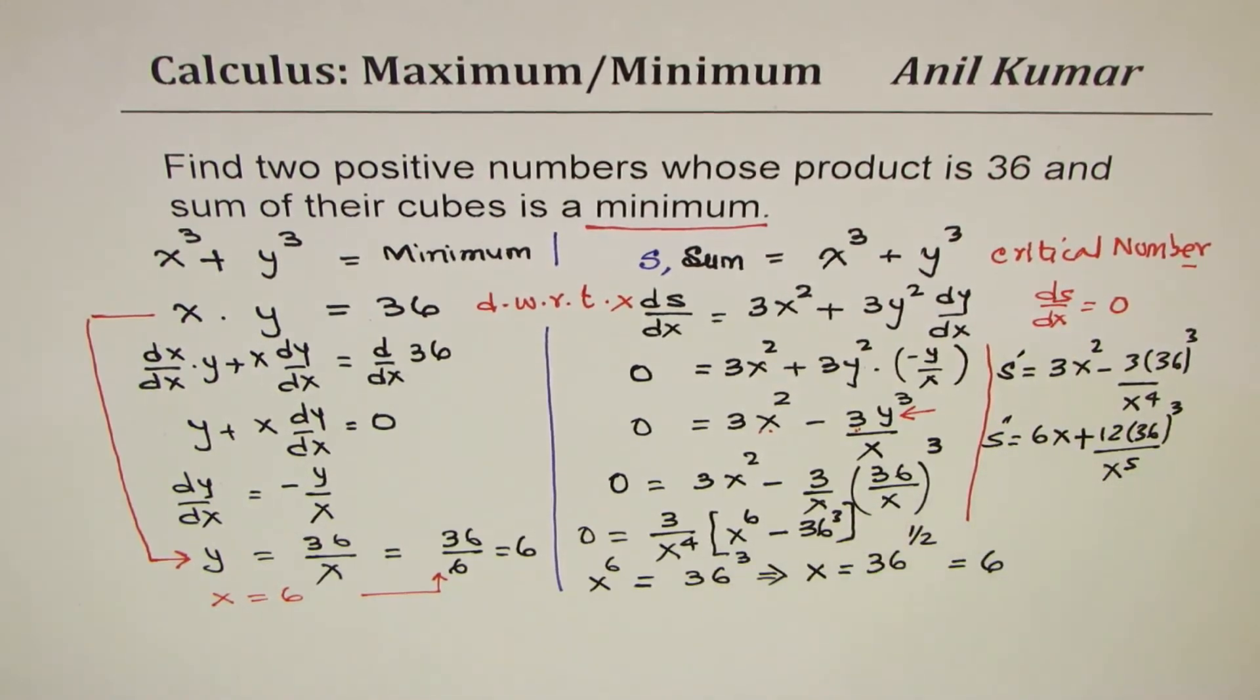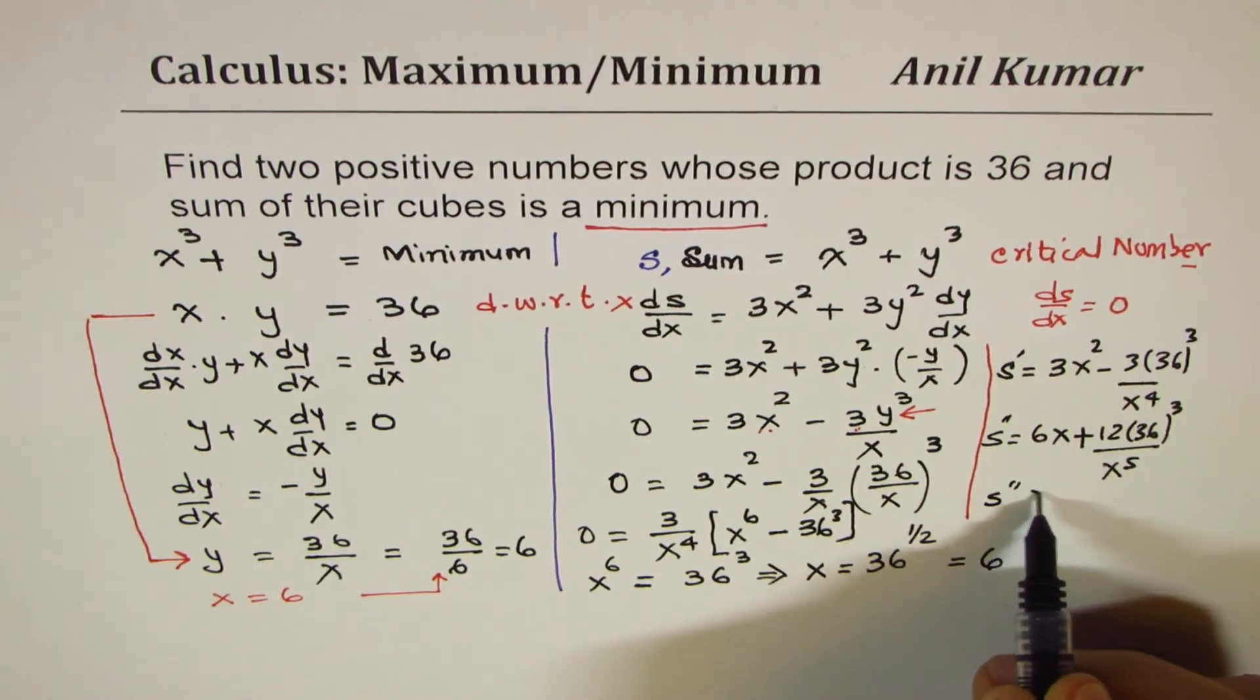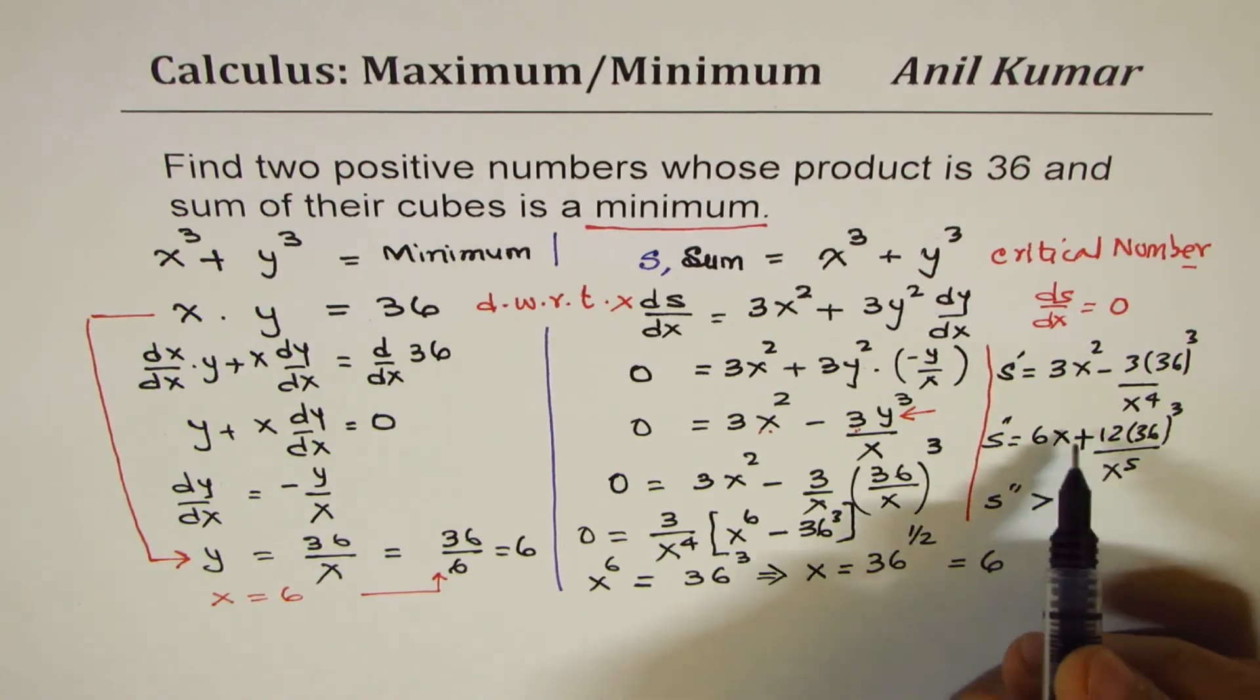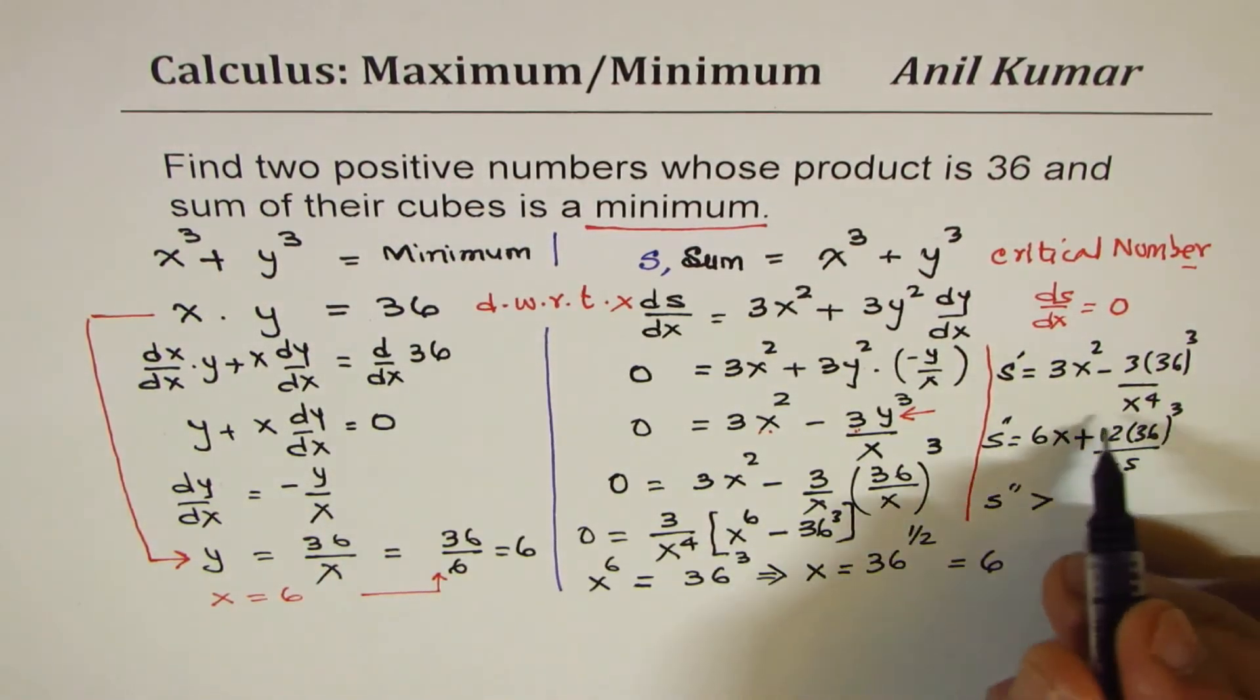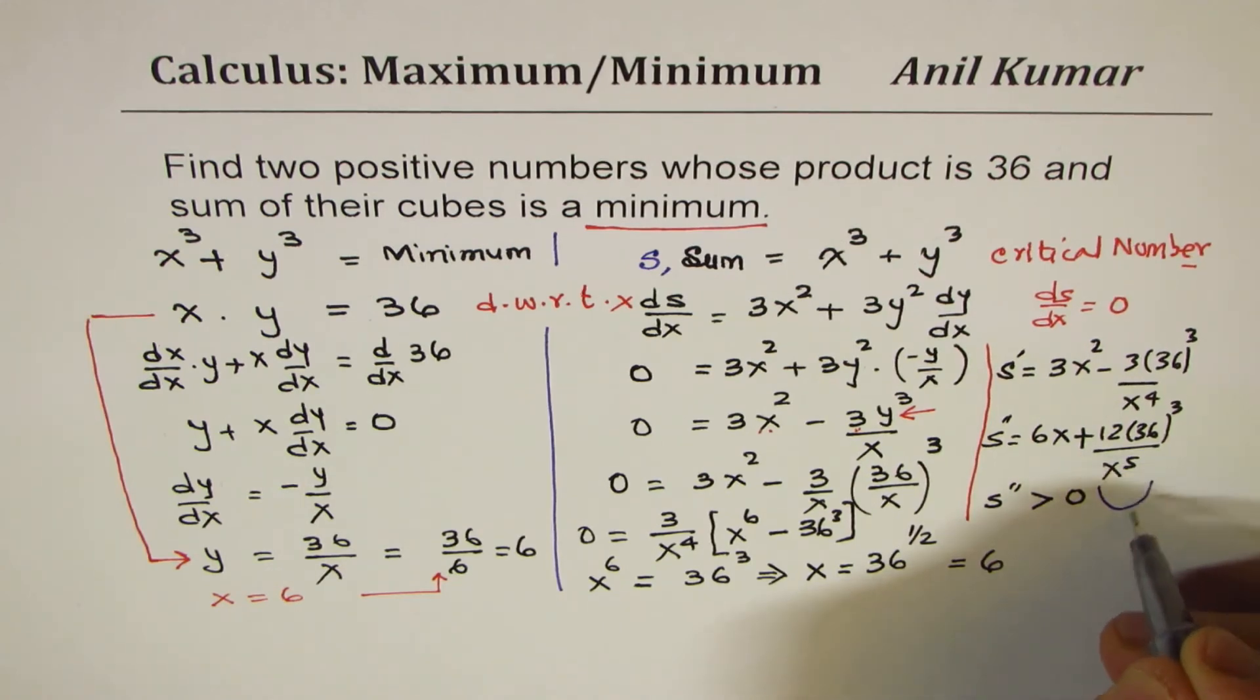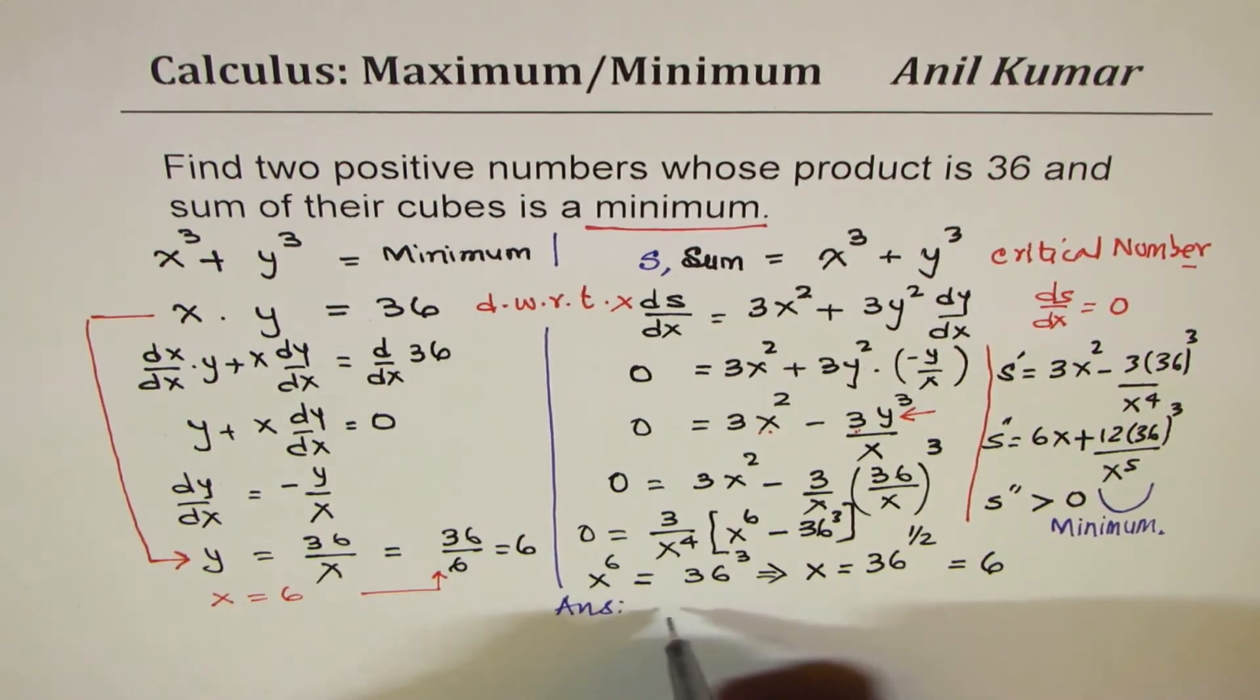And -4 minus 1 will give me x to the power of 5 here. So you know this second derivative is actually greater than 0 for any two positive numbers, and that means it's concave up, which means minimum. And therefore our answer is that the numbers are 6 and 6.